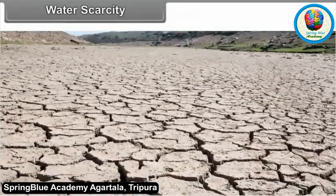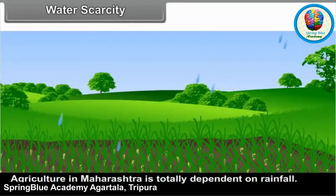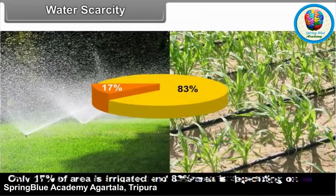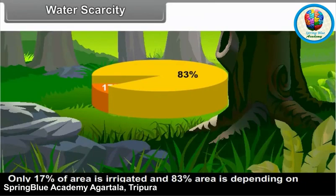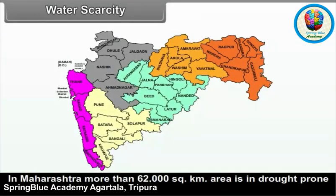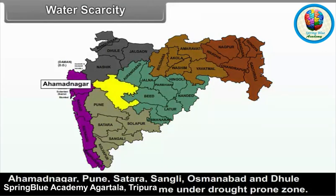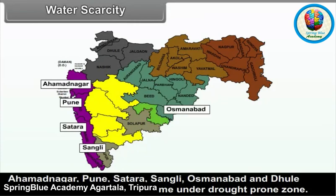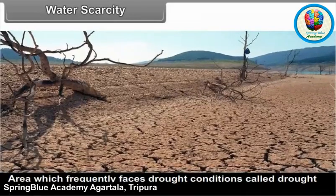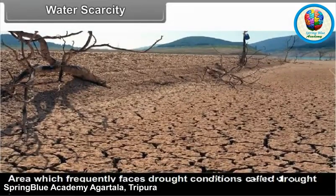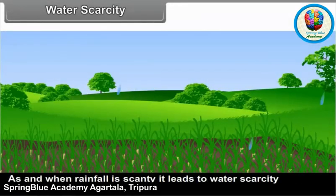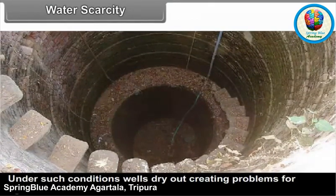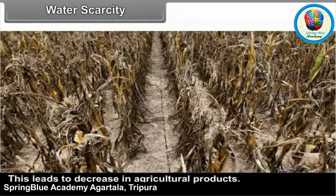Water Scarcity: Agriculture in Maharashtra is totally dependent on rainfall. Only 17% of area is irrigated and 83% of area depends on rainfall. More than 62,000 square kilometers of area in Maharashtra is drought-prone zone. Ahmadnagar, Pune, Satara, Sangli, Osmanabad and Dure districts come under the drought-prone zone. Area which frequently faces drought conditions is called a drought-prone area. As and when rainfall is scanty, it leads to water scarcity conditions, causing wells to dry out, creating problems for agriculture and leading to a decrease in agricultural products.